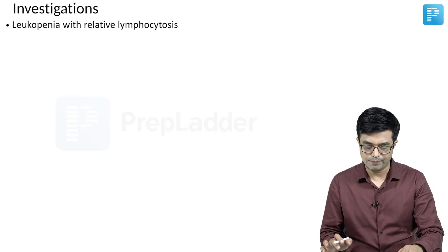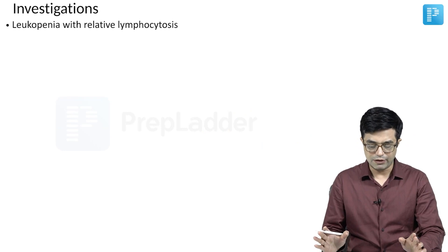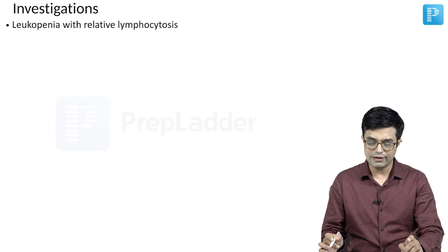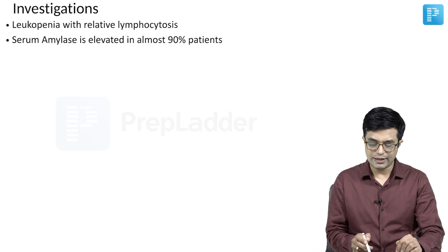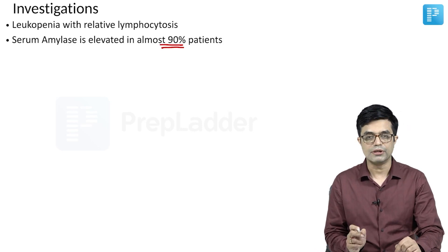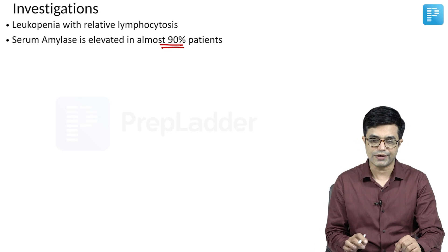What are the investigations that we do? Leukopenia will be seen on complete blood count with relative lymphocytosis. Serum amylase is elevated in almost 90 percent of these patients, but it is nonspecific.